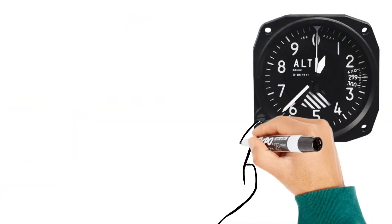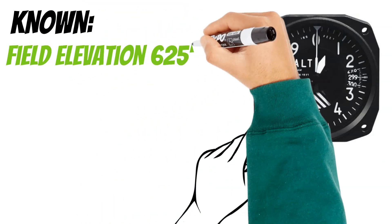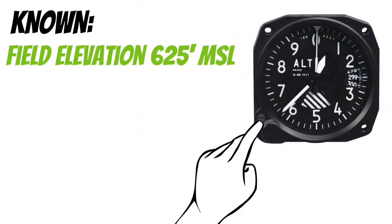That's why if you know your field elevation, you can actually spin that in instead of an altimeter setting. Because what you're doing is you're saying, I know I'm at 625 feet MSL, so my pressure must be 29.90 inches of mercury.